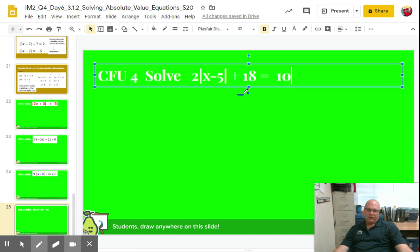So first thing you do is you should subtract 18 from both sides, minus 18, minus 18, right? So then you have two absolute value X minus five equals negative eight.